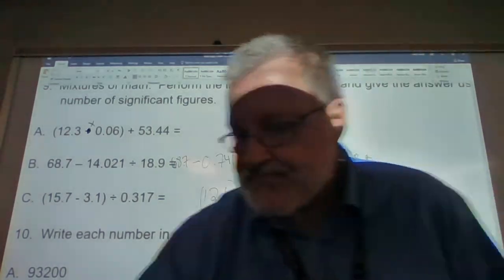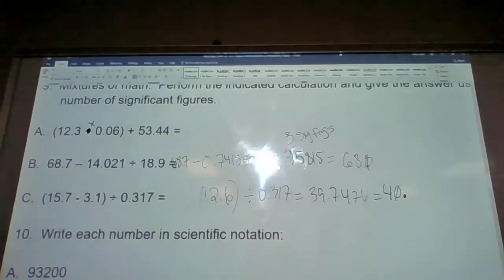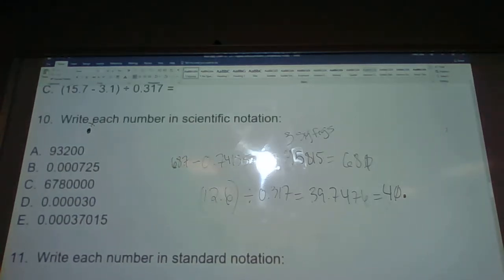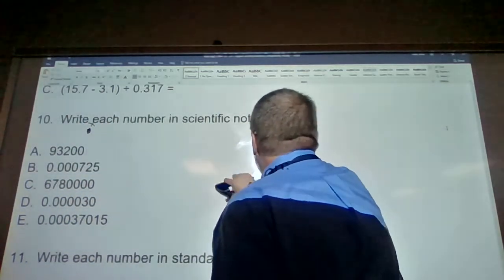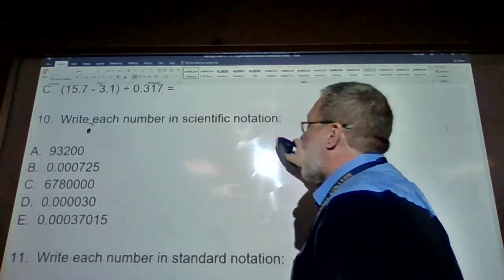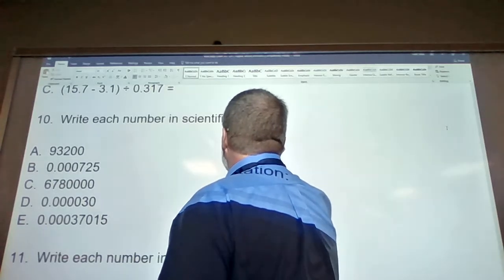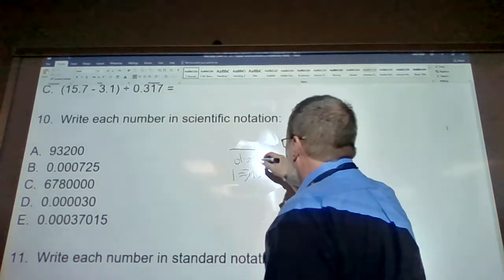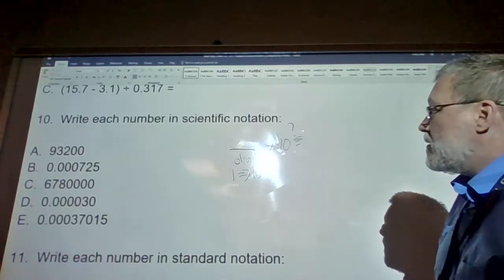How do we write numbers in scientific notation? Scientific notation is expressed as a digit between 1 and 10, times 10 to some power.